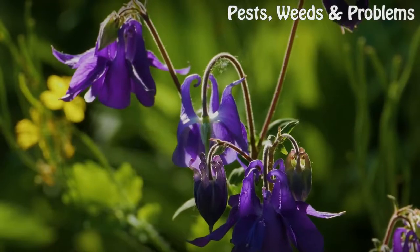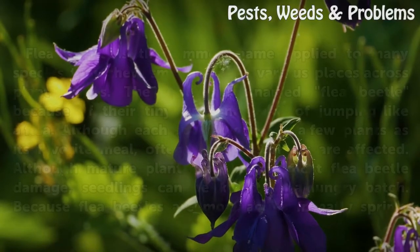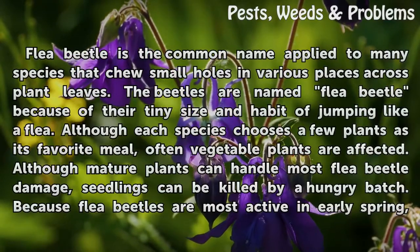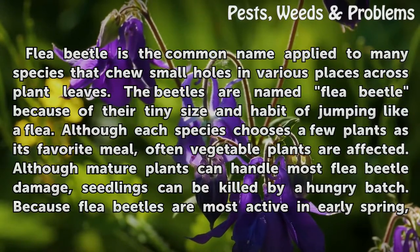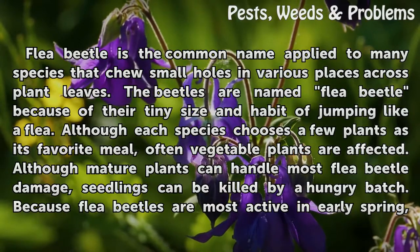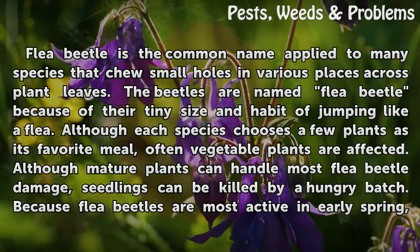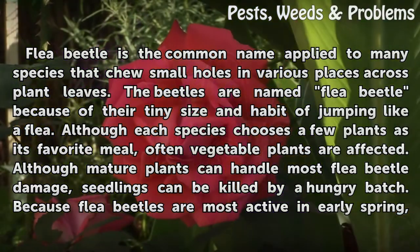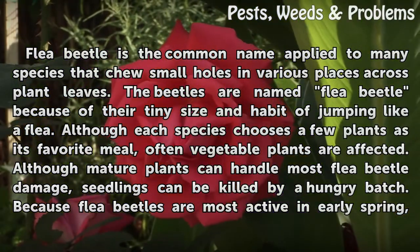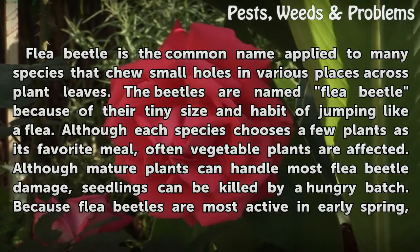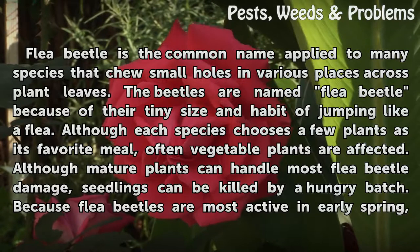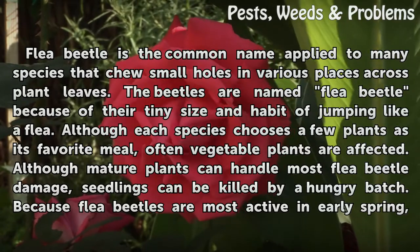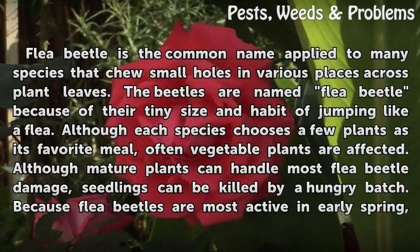Flea Beetle is the common name applied to many species that chew small holes in various places across plant leaves. The beetles are named Flea Beetle because of their tiny size and habit of jumping like a flea. Although each species chooses a few plants as its favorite meal, vegetable plants are often affected. While mature plants can handle most flea beetle damage, seedlings can be killed by a hungry batch.